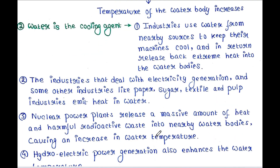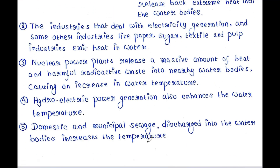Nuclear power plants release a massive amount of heat and harmful radioactive waste into nearby water bodies, causing an increase in water temperature. Hydroelectric power generation also enhances the water temperature. Domestic and municipal sewage discharge into water bodies also increases the temperature.